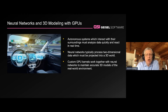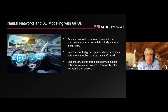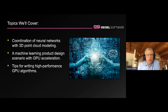Autonomous systems need to be able to make decisions in real time, recognize objects, and react quickly. Neural networks typically work on two-dimensional images such as camera images, and you can detect objects through machine learning techniques. But it can be very useful to integrate that into a 3D view of the world. We've written custom GPU kernels which work together with a neural network to develop and maintain models of the real-world environment. We'll cover coordination of neural networks with 3D point cloud-based modeling, run through a quick machine learning scenario, and finish with tips for writing high-performance GPU algorithms.